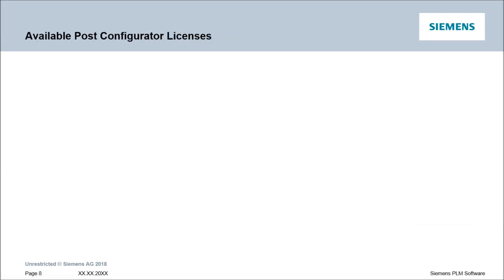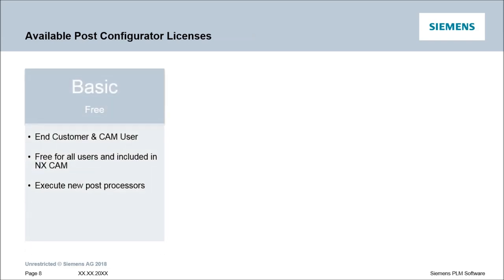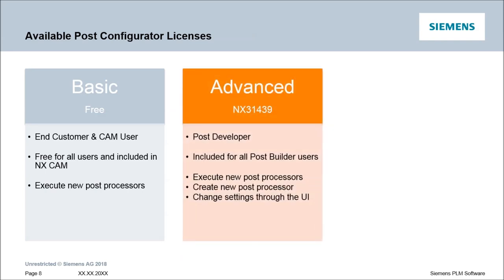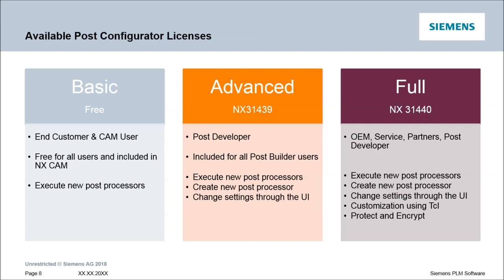Which license types are available for PostConfigurator? There are three license types. The basic license is free and included in NX CAM — the user can only execute post processors created by PostConfigurator. With the advanced license, you can execute and create new post processors and change settings in the PostConfigurator user interface. This license is generally available for all users who have a PostBuilder license. The full license is recommended for everyone who wants to develop post processors with additional TCL customization and wants to protect and encrypt posts, and includes advanced debugging functionality to customize post output and the PostConfigurator user interface.